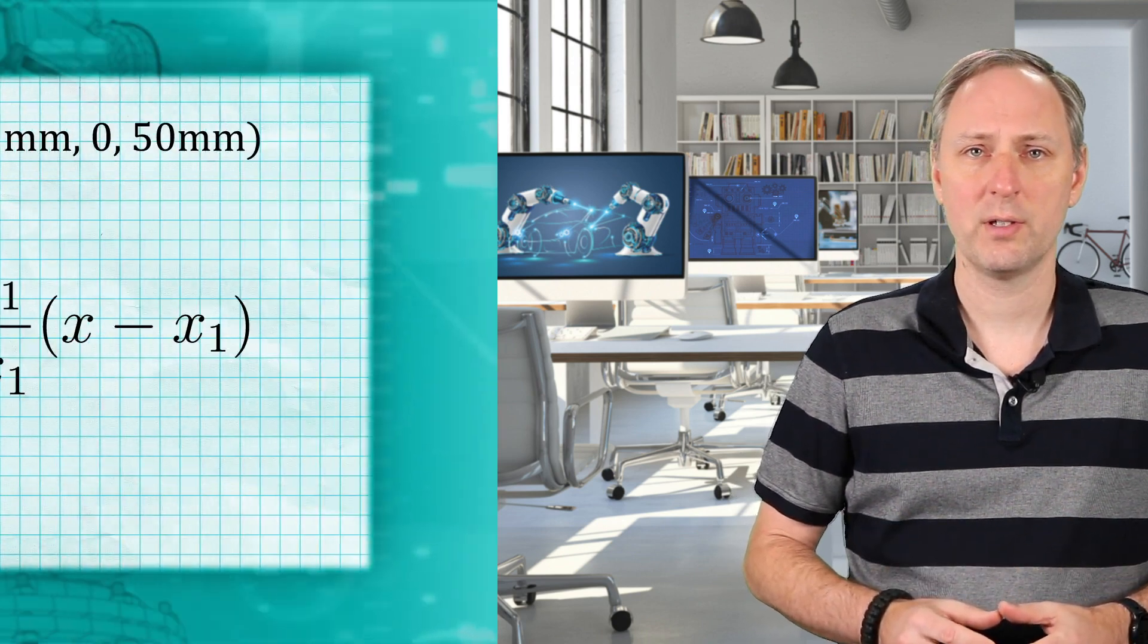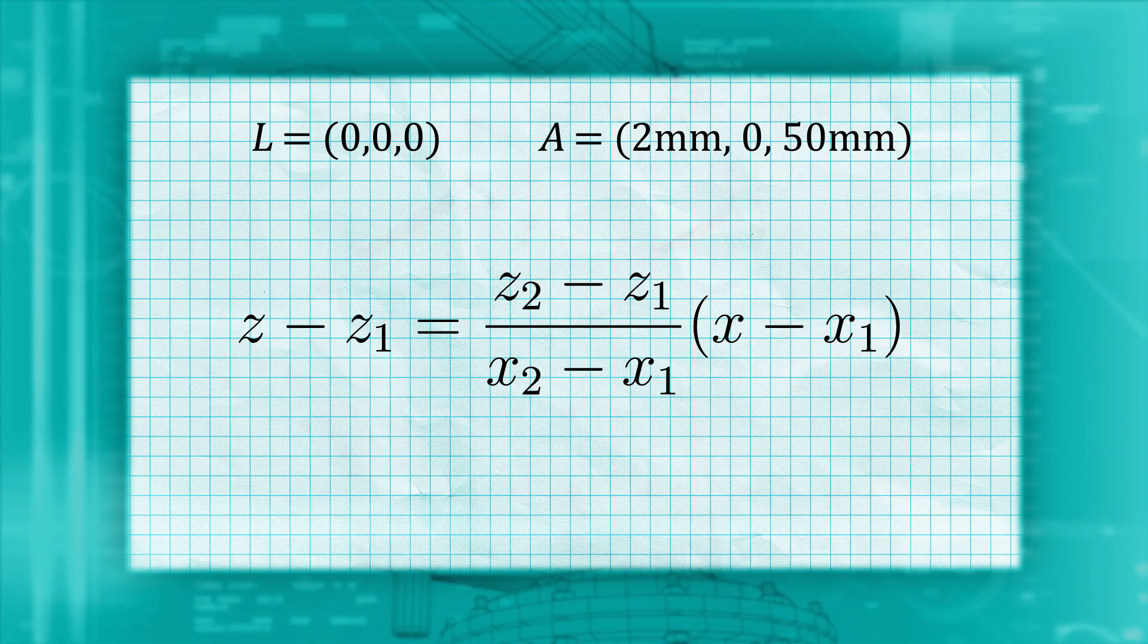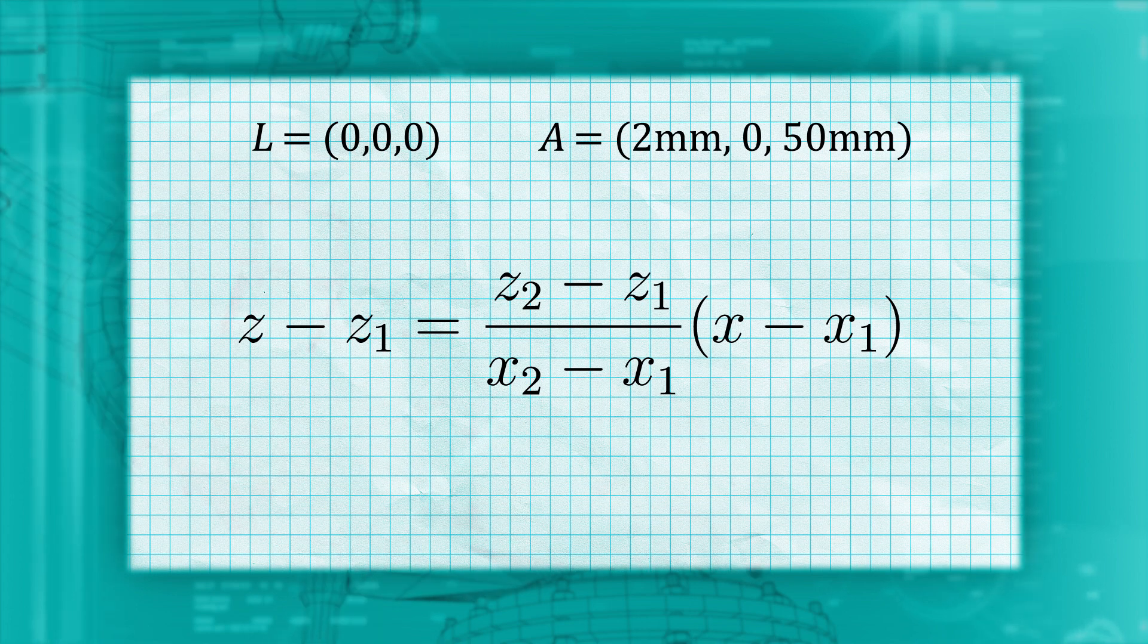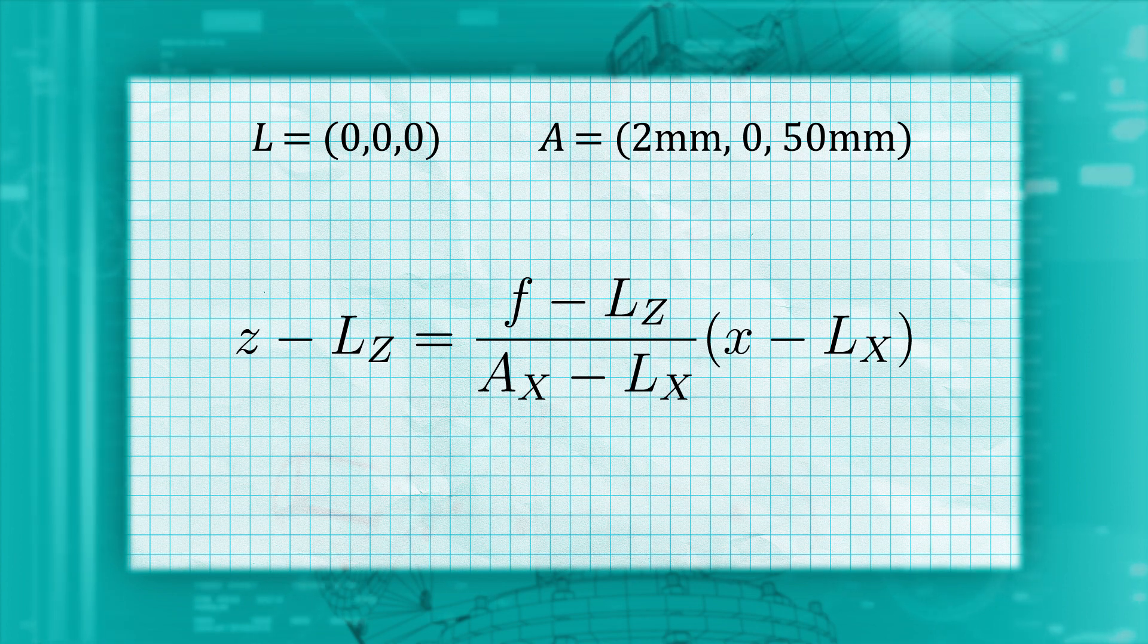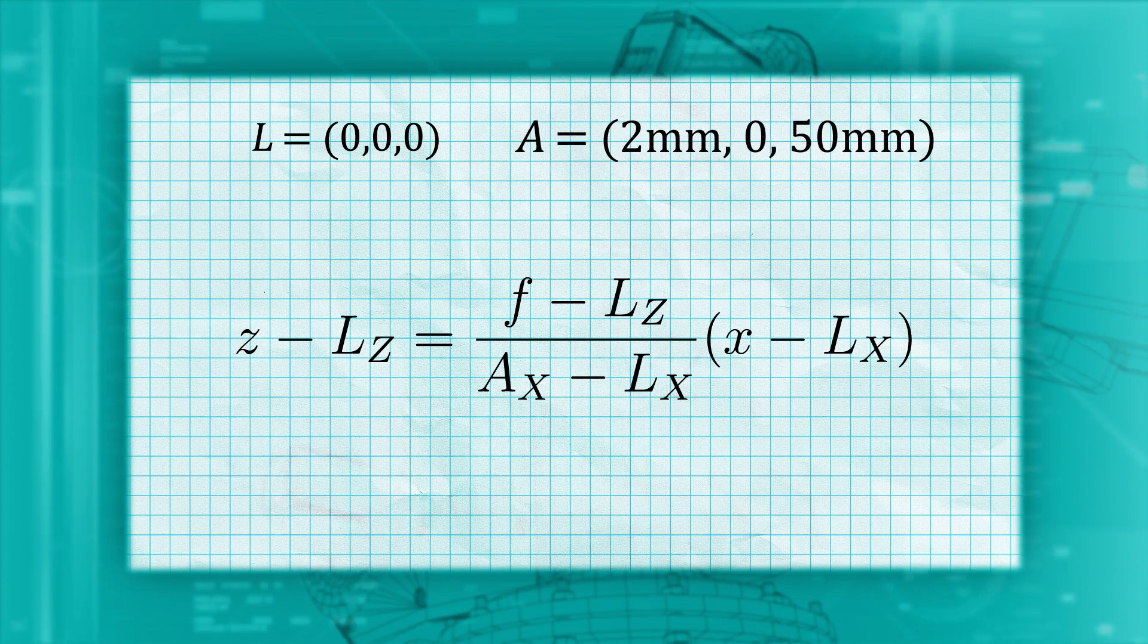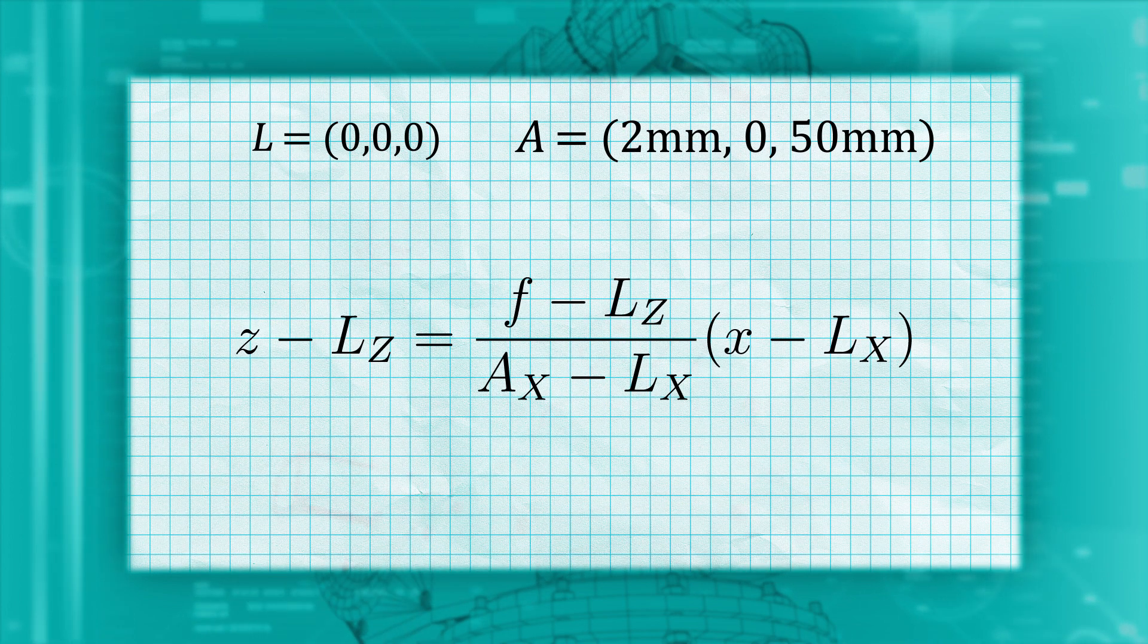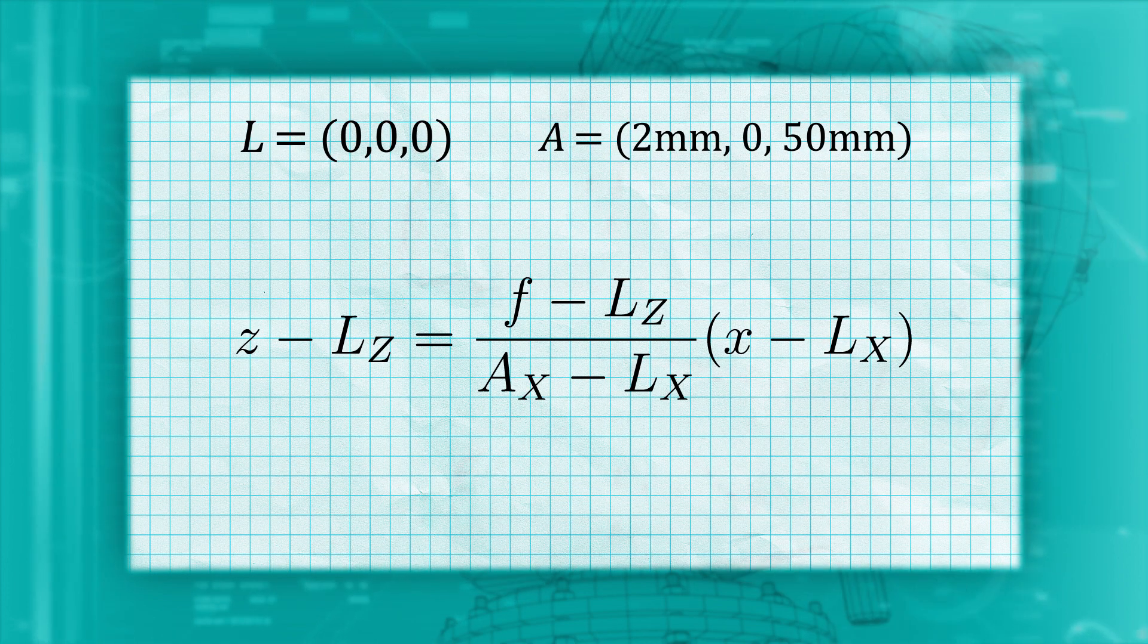From this, we can create the equation for a line through two points: Z minus Z1 equals Z2 minus Z1 divided by X2 minus X1 multiplied by X minus X1. We already know some elements of this equation. We will set point 2 to be the feature on the image plane at point A, which is located at the focal length along the Z axis at the X coordinate we have already found.